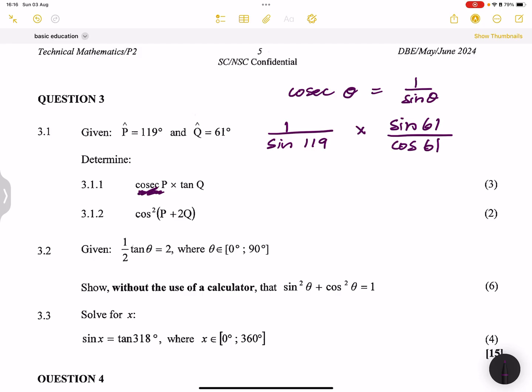Okay. So if I have 119, that's the same as the sine of 180 minus 61 actually. So that's sine of 180 minus 61, right? Multiplied by sine 61 over cosine of 61.